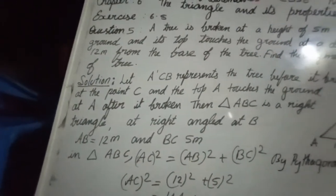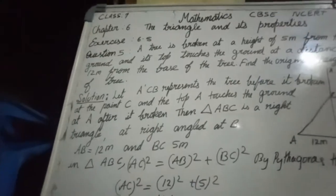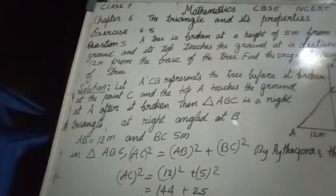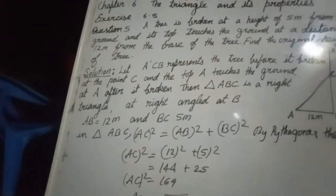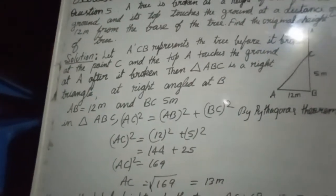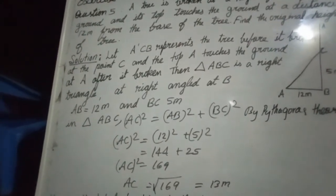So AC square is equal to 12 square plus 5 square. 12 square is 144 plus 25. AC square is equal to 169. AC is equal to square root of 169.